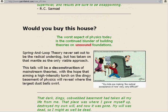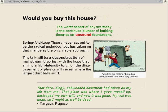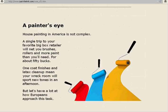That dark, dingy, cobweb basement had taken all my life from me. That place was where I gave myself up, destroyed my own will, and now it was gone. My will was dead, so I might as well be dead. Margo Fragoso. A Painter's Eye. House painting in America is not complex. A single trip to your favorite big box retailer will net you brushes, rollers, and more paint than you'll need, for about 50 bucks. One coat finishes and latex clean-up, meaning your rec room will sport new tones in an afternoon. But let's have a look at how Europeans approach this task.